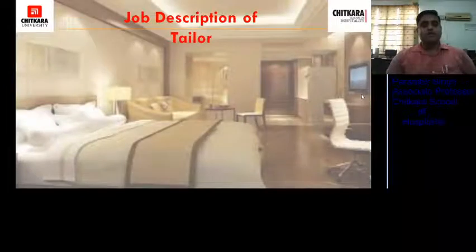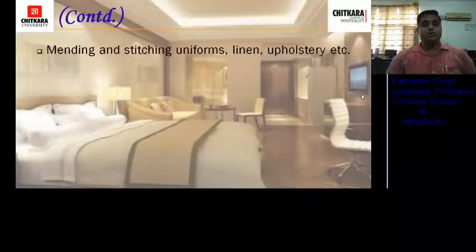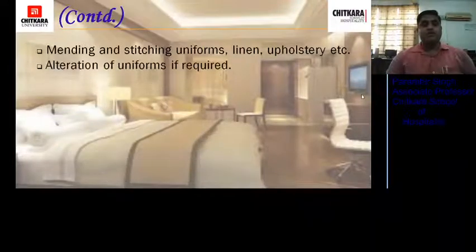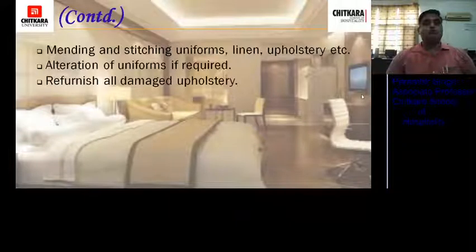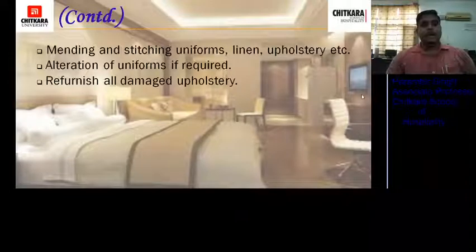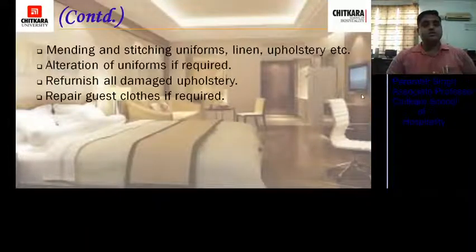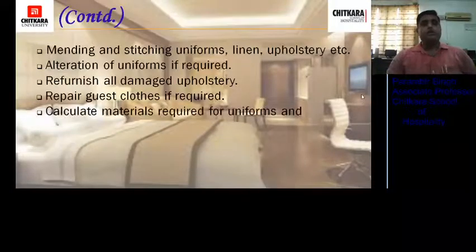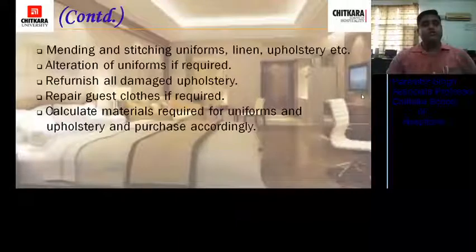Job description of the tailor: reports to the linen room supervisor. Responsible for sewing new uniforms, altering and mending work of linen, uniforms, and upholstery. Duties and responsibilities include: mending and stitching uniforms, linen, and upholstery; alteration of uniforms if required; refurbishing all damaged upholstery such as cushioning material, heavy curtains, and draperies; repairing guest clothes if required — including staging buttons or stitching for guests; calculating materials required for uniforms and upholstery; and ensuring purchases are made accordingly.